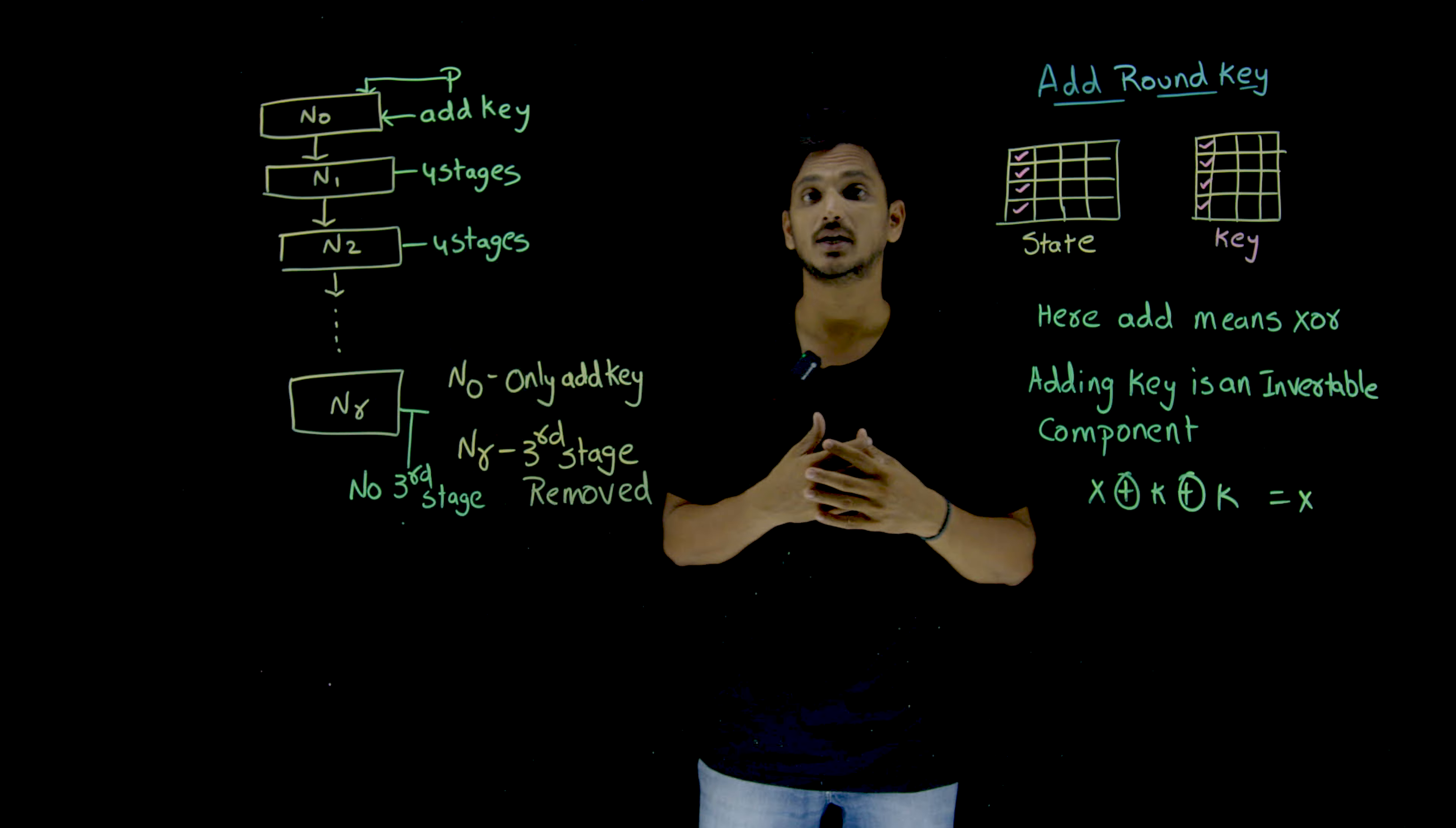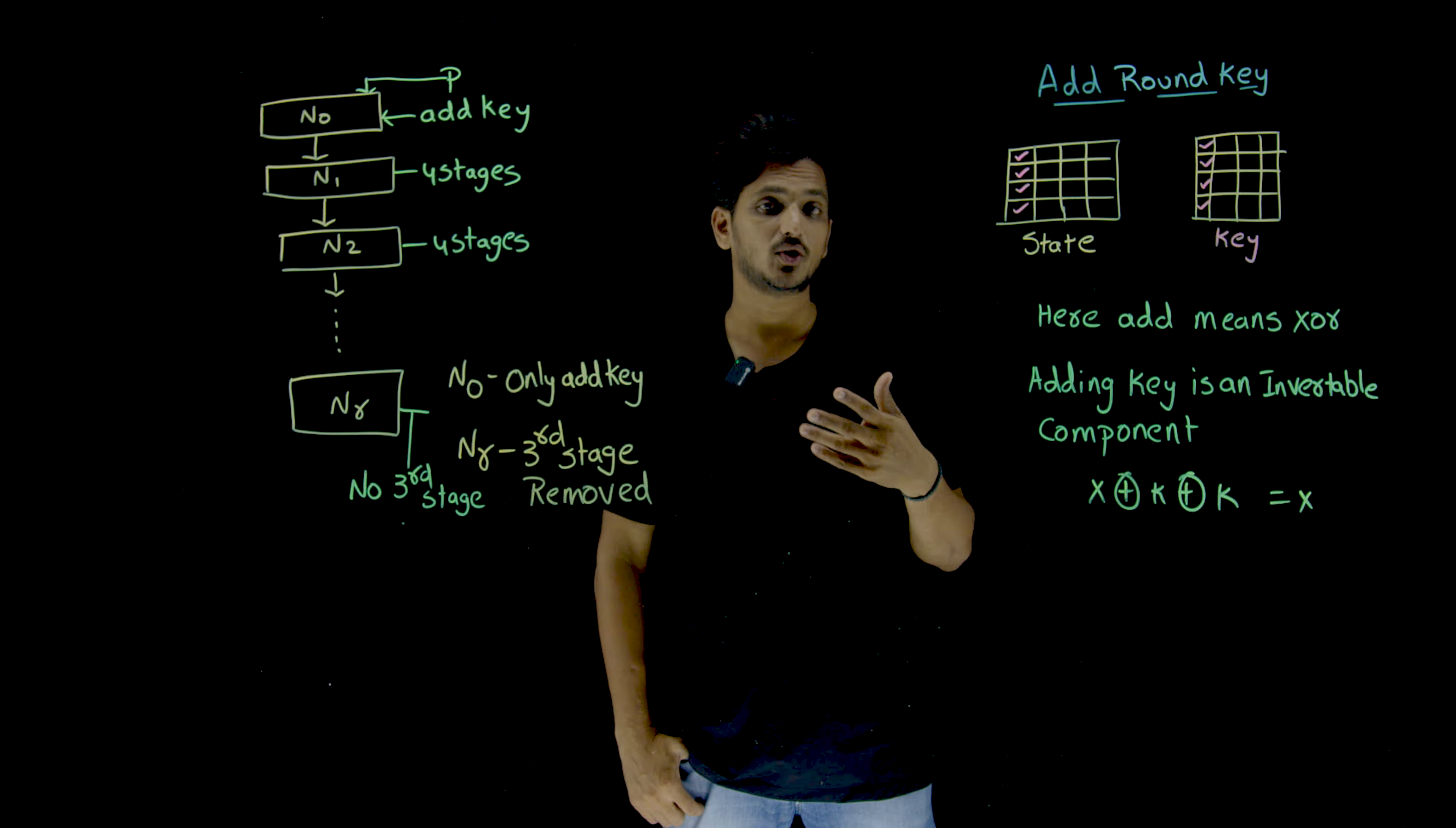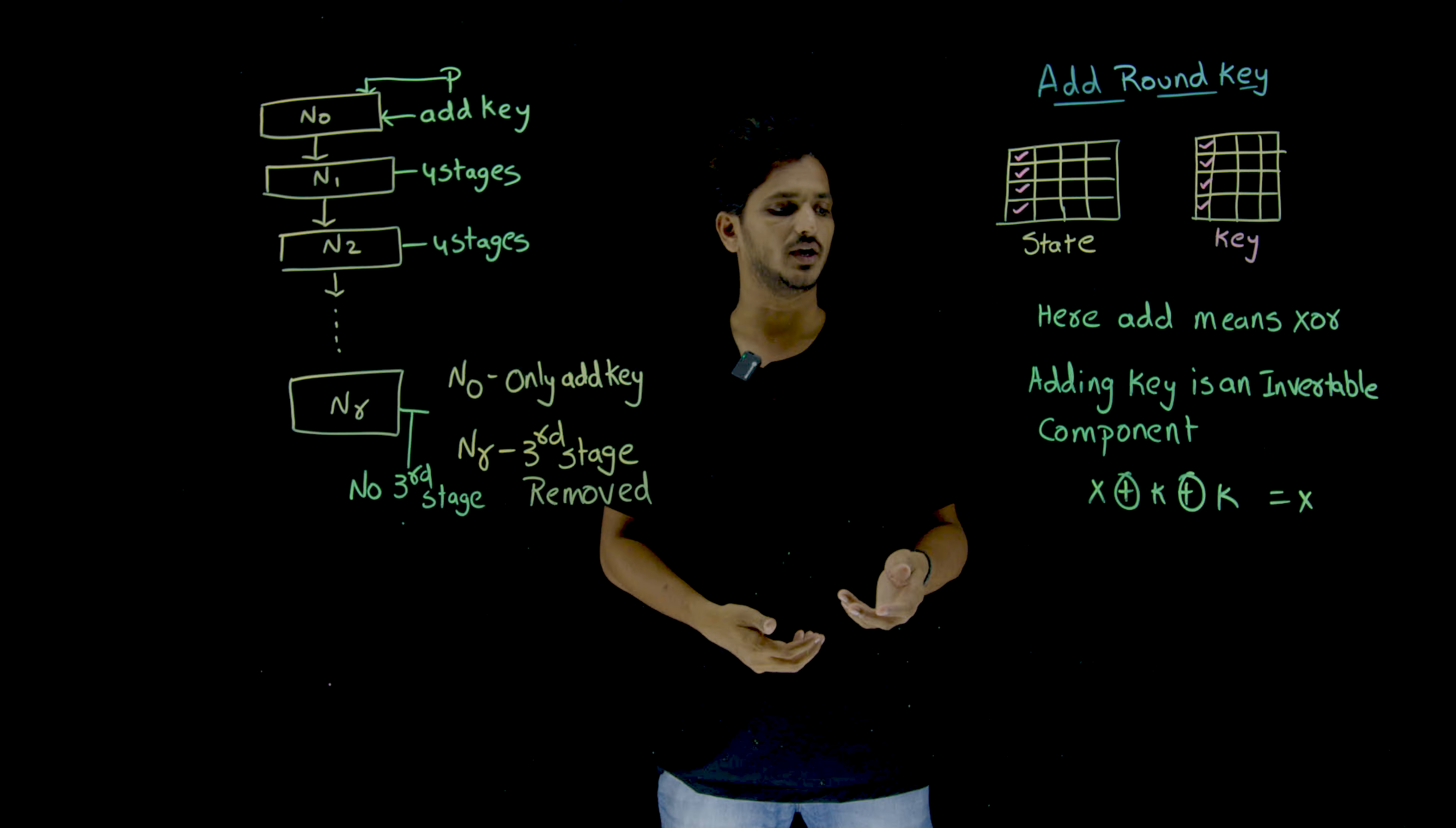And the point you need to understand here, adding means XOR operation. Because we follow GF of two operations. Here adding key, adding means XOR operation. And the next point you need to understand, adding key is an invertible component. Because here adding means we are doing XOR operation. XOR operation is an invertible component.